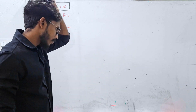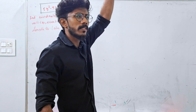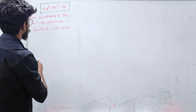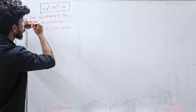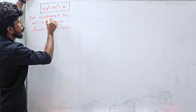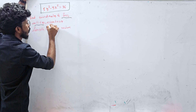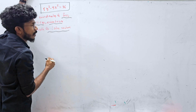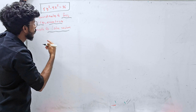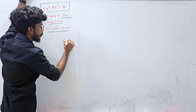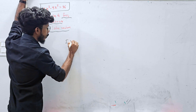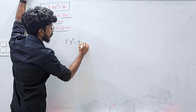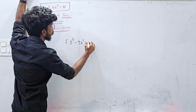Hyperbola is the question for you. I expect you to have an easy mode of question. One equation is given: coordinates of foci, vertices, eccentricity, and length of latus rectum. This is simple. The equation is 5y² minus 9x² equal to 36.